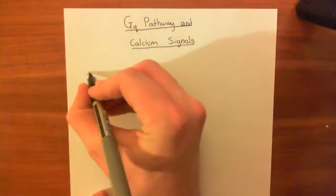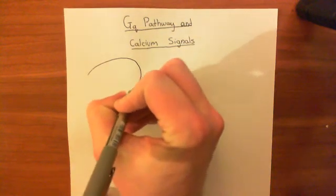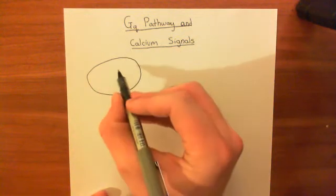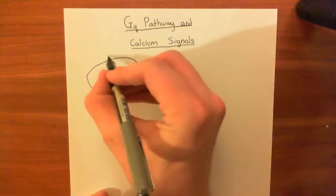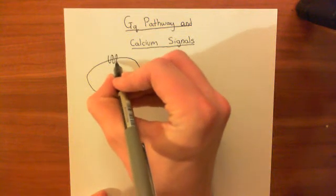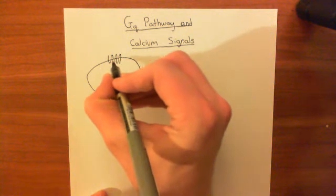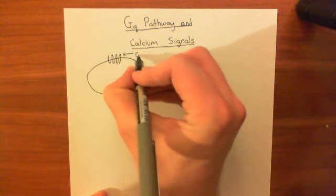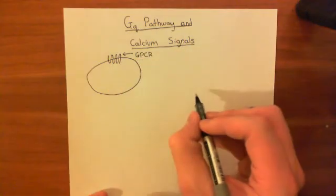Let's say we have a cell here. In this cell, what's going to happen is we are going to stimulate G protein coupled receptors. We're going to keep it deliberately general — we're going to stimulate a G protein coupled receptor that is coupled to the GQ G protein.